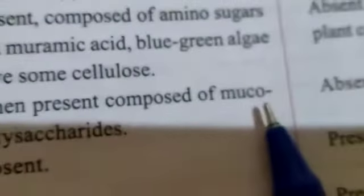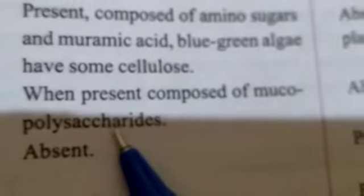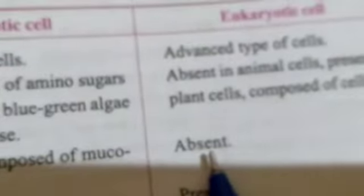The third feature to write is 'Capsule'. In prokaryotic cell write: when present, composed of mucopolysaccharide. If a capsule is present, it is made of mucopolysaccharide. In eukaryotic cell, the capsule is absent. The next feature is 'Endoplasmic Reticulum' — absent in prokaryotic, present in eukaryotic. Next, write 'Golgi Complex' — absent in prokaryotic and present in eukaryotic.